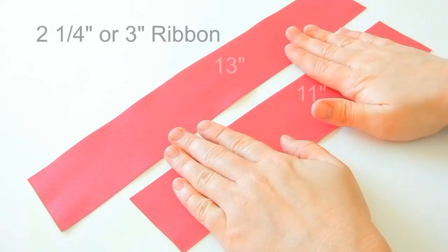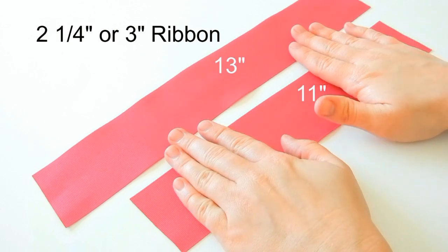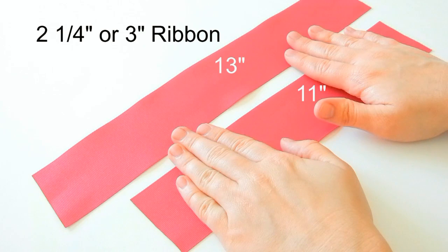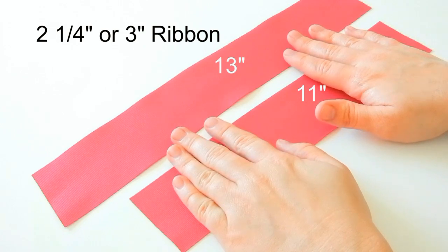We're going to start out by cutting our ribbon for the bow. This ribbon is two and a quarter inches wide, and you can use two and a quarter inches wide or three inches wide for this particular bow.